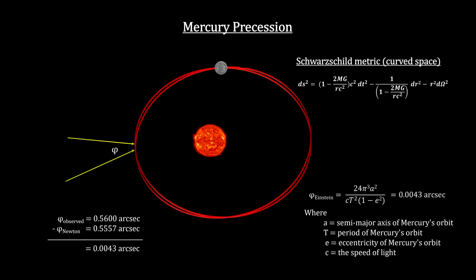It's the curved space around the Sun, defined by the Schwarzschild metric, that produces this small additional precession on each orbit. Here's what it looks like.